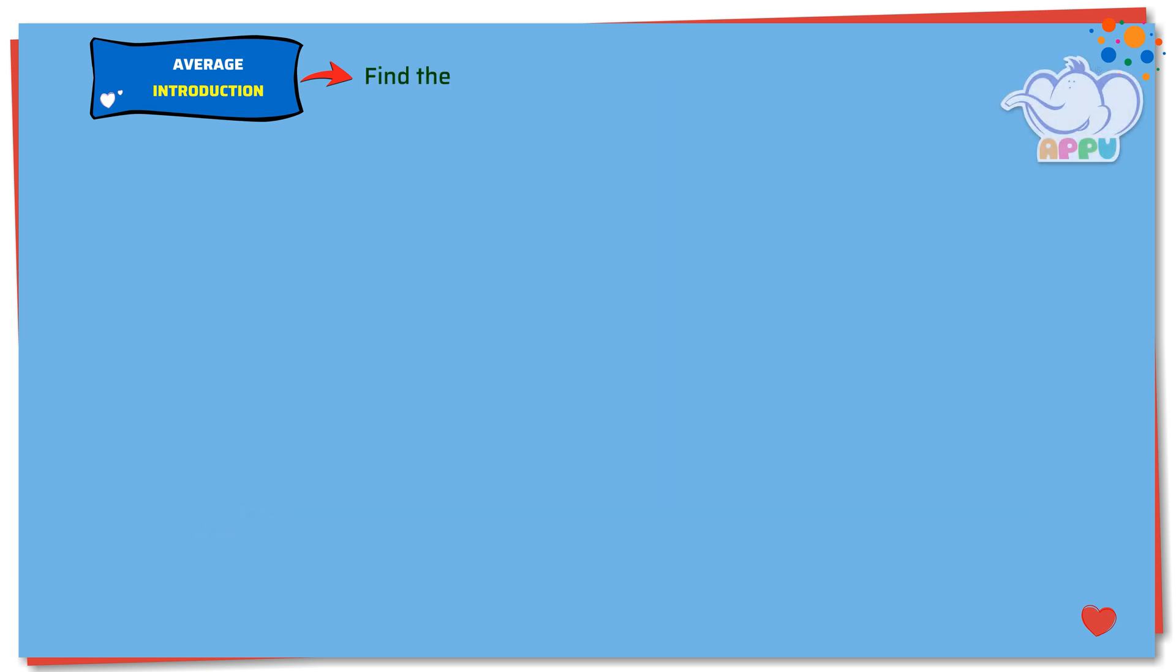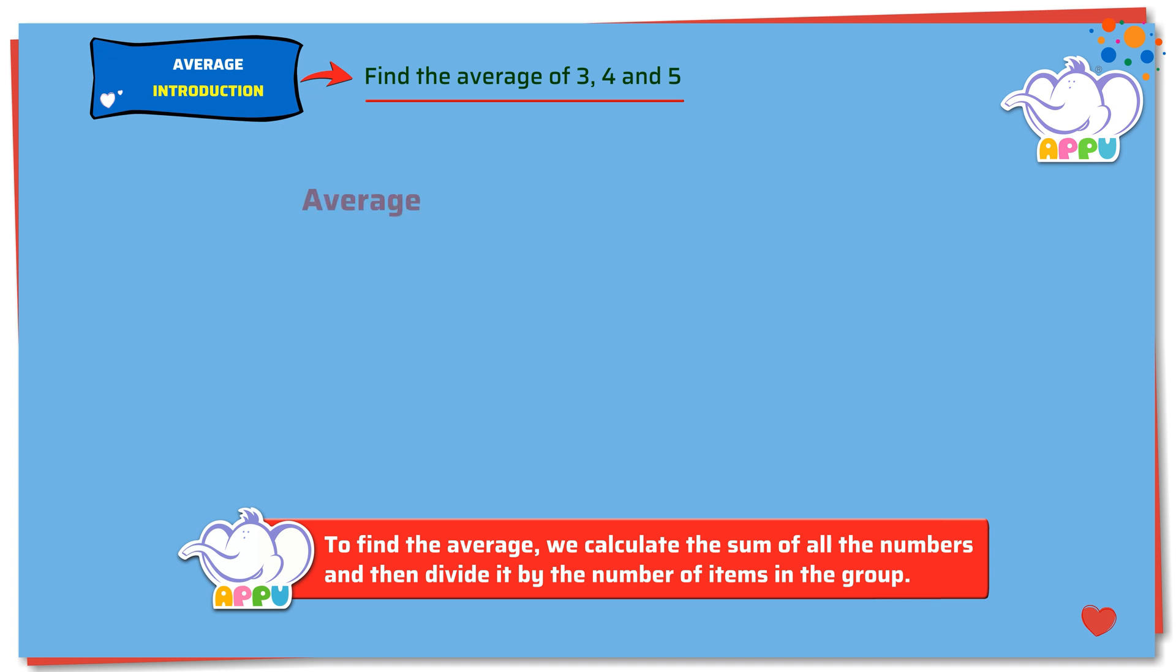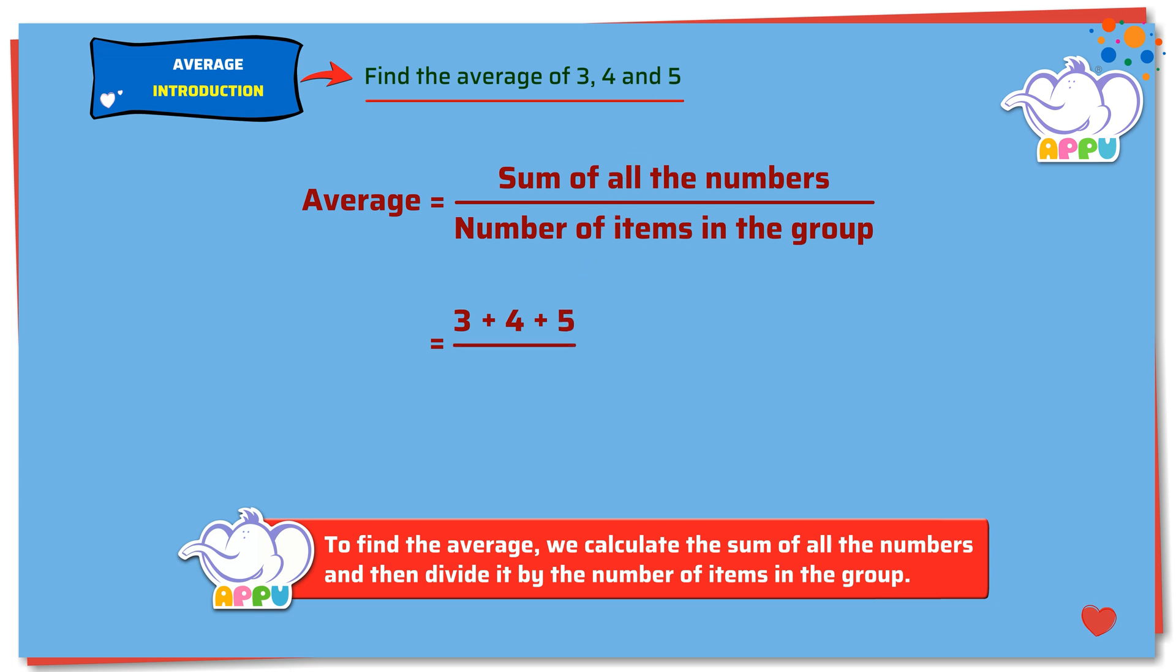Find the average of 3, 4 and 5. We know that average equals sum of all the numbers divided by number of items in the group. Let's find the sum first. 3 plus 4 plus 5. Then we find the number of items.